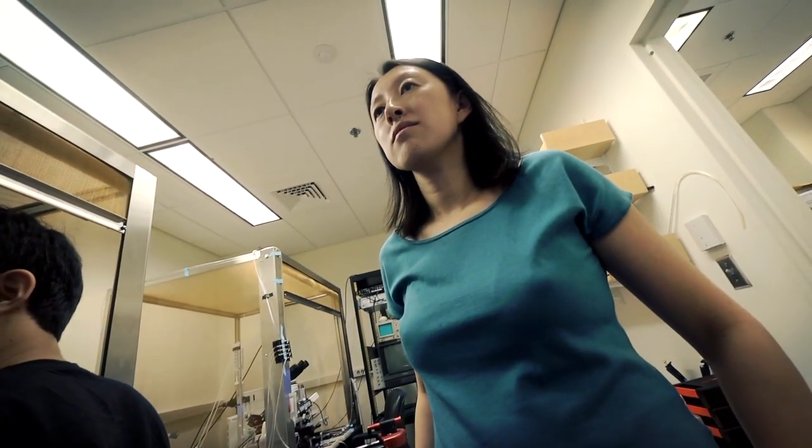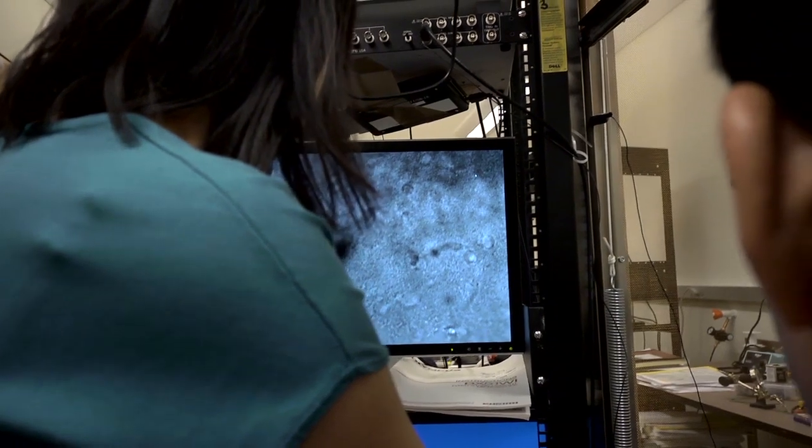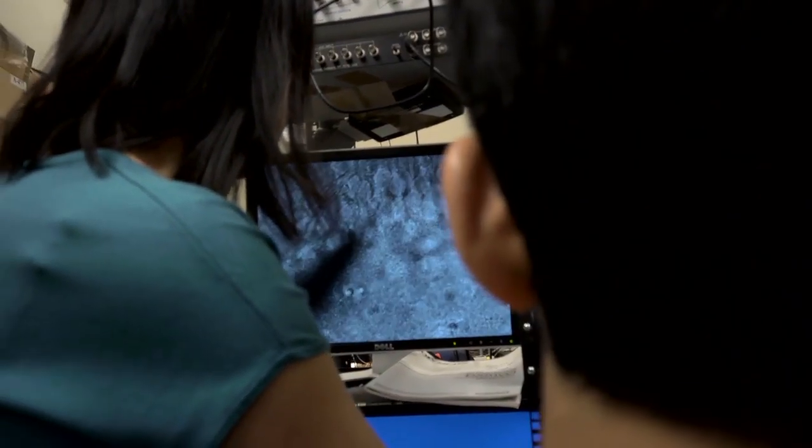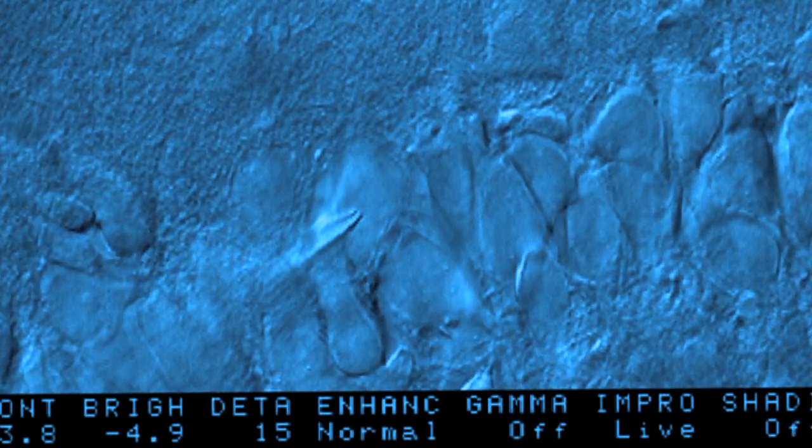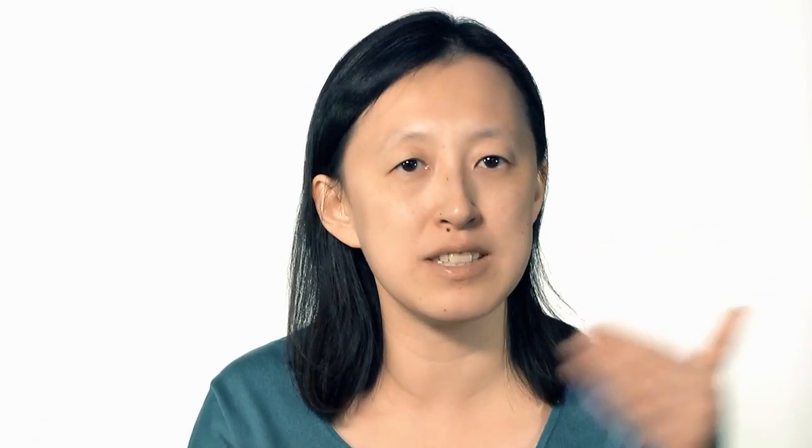Picower Institute has this coherent continuum of levels of research trying to understand questions related to learning and memory at multiple levels. I'm the bridge between the genes and the brain circuitry, so I'm right in the middle to bring these two gaps together.